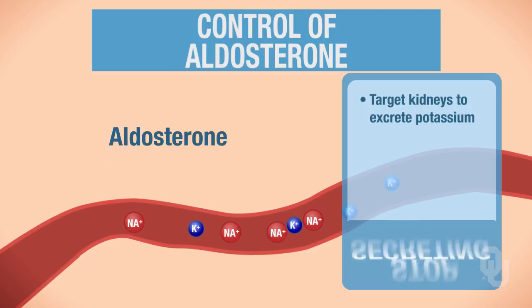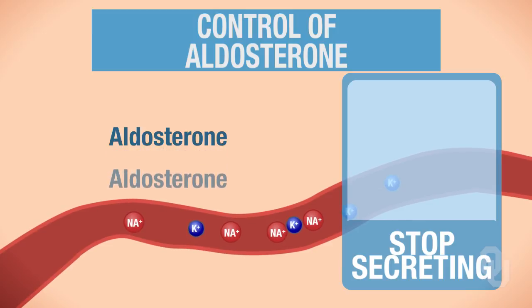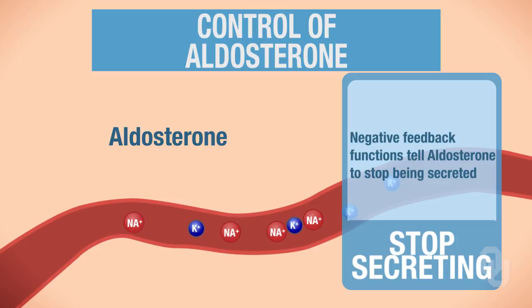To turn this system off, once sodium and potassium are back at their normal levels, negative feedback causes aldosterone to stop being secreted.